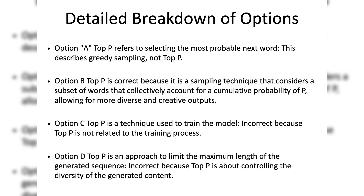Option C states that top P is a technique used to train the model. This is incorrect because top P is not related to the training process — it's a sampling technique used during the generation phase, not during training. Option D states that top P is an approach to limit the maximum length of the generated sequence. This is also incorrect because top P is not about controlling sequence length, but about controlling the diversity of generated content by filtering words based on their cumulative probability.